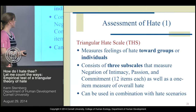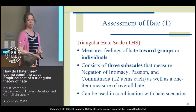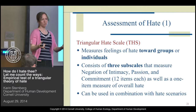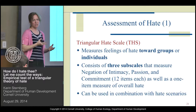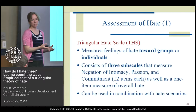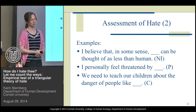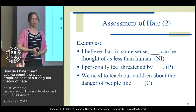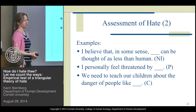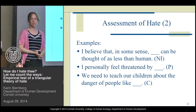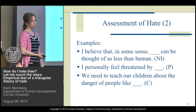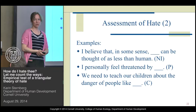With the hate scale, you can potentially measure feelings of hate towards groups or individuals. It consists of three subscales corresponding to the three components of hate, and it does not necessarily need to be used in combination with scenarios. An example item for negation of intimacy would be: 'I believe that in some sense, the target group or person can be thought of as less than human.' For passion: 'I personally feel threatened by the target group or person.' For commitment: 'We need to teach our children about the danger of people like [target group or person].'